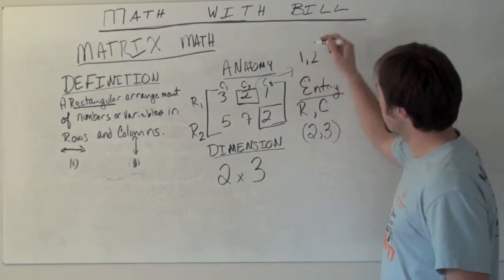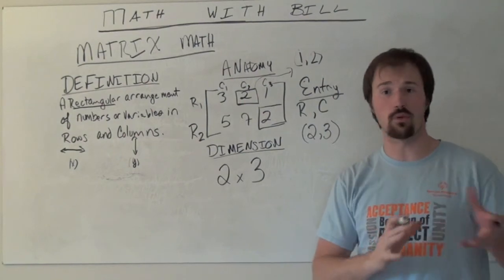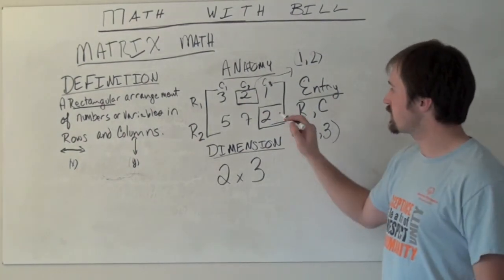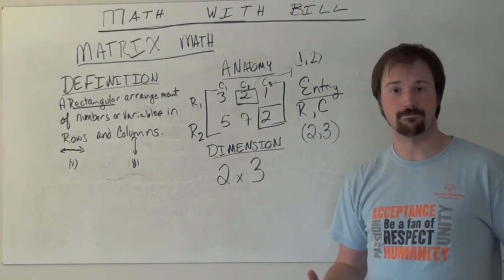So these entry positions don't have anything to do with a point on a graph. They're just telling us where within the matrix are we looking.